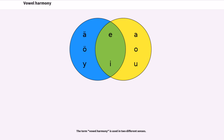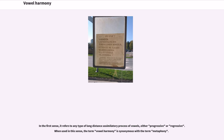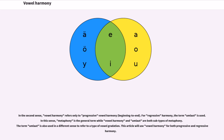The term vowel harmony is used in two different senses. In the first sense, it refers to any type of long-distance assimilatory process of vowels, either progressive or regressive. When used in this sense, the term vowel harmony is synonymous with the term metaphony. In the second sense, vowel harmony refers only to progressive vowel harmony. For regressive harmony, the term umlaut is used. In this sense, metaphony is the general term while vowel harmony and umlaut are both subtypes of metaphony. This article will use vowel harmony for both progressive and regressive harmony.